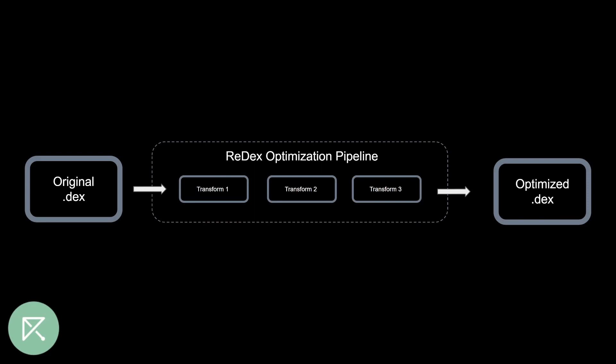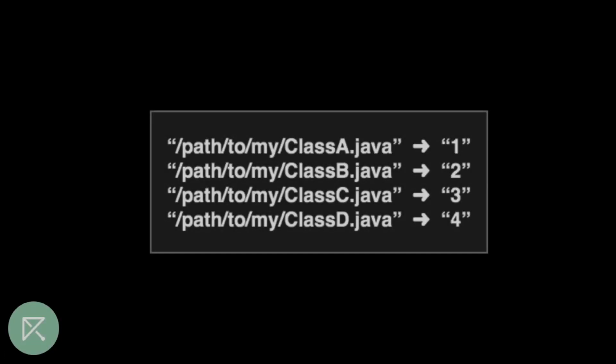The ReDex pipeline is generalized to allow any kind of DEX transformation. Minification, inlining, and dead code elimination significantly reduce bytecode size.